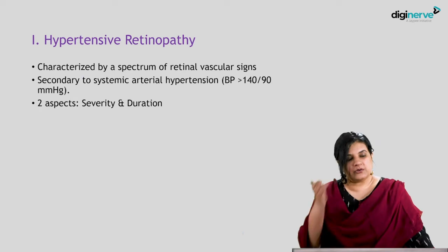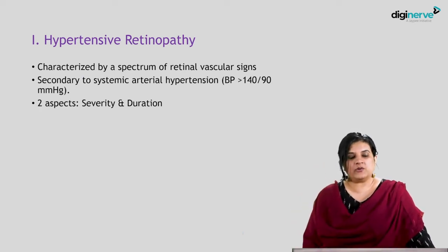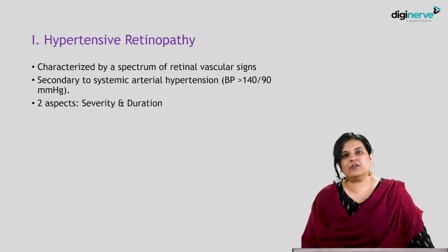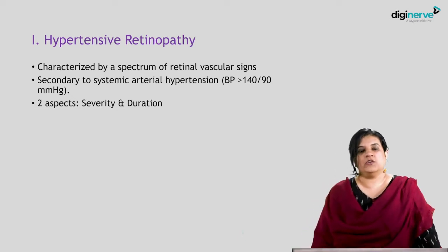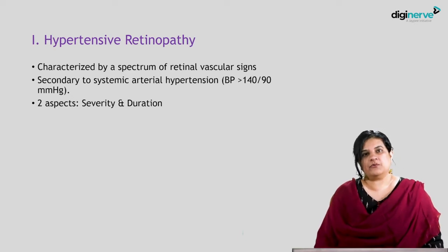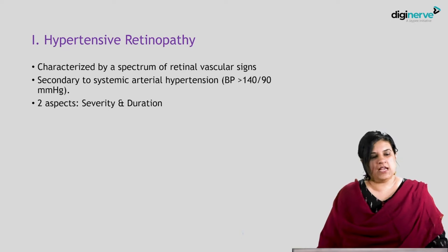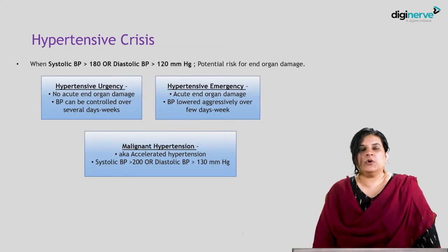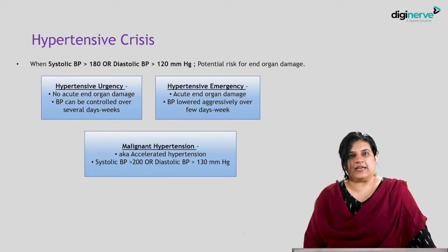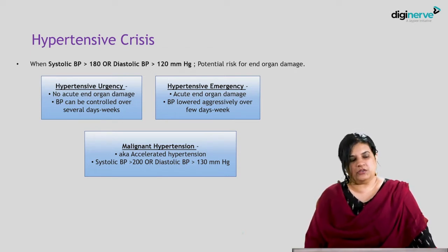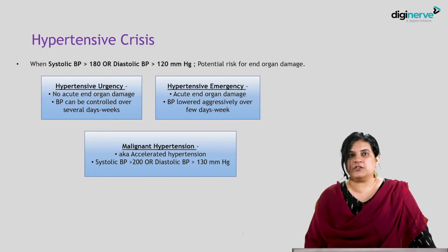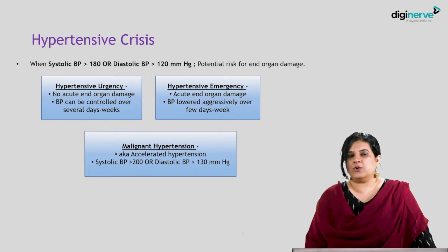Hypertensive retinopathy is characterized by a spectrum of retinal vascular signs which are secondary to systemic arterial hypertension, wherein the blood pressure is usually over 140/90 mmHg. There are two aspects related to hypertensive retinopathy: severity and duration. We also need to be aware of hypertensive crisis wherein the systolic BP is over 180 mmHg or the diastolic BP is over 120 mmHg, and this condition has a potential risk for causing end organ damage.